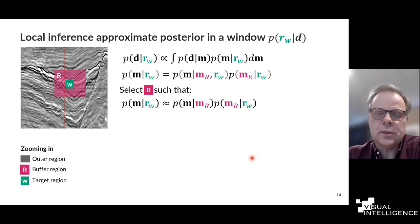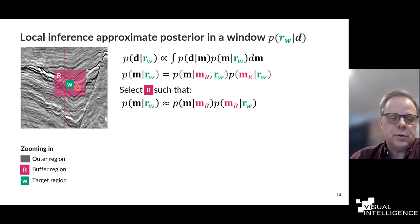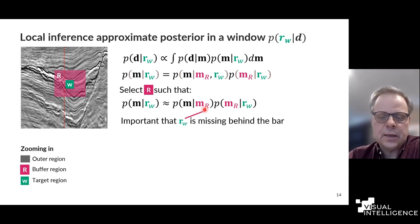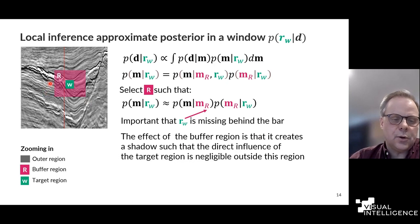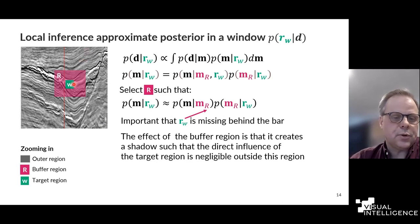When we do this local inference, we want to do the integration in parts. We split this integral into a buffer zone and a window zone. We need to select this buffer zone such that we can remove the target variable from the conditioning. Basically, we want the buffer zone to be large enough that it creates a shadow, so that when you look at R from the outside and look back in, the only thing you can see is M_R. So we have three regions: the outer region, the buffer region, and the target region.